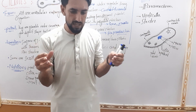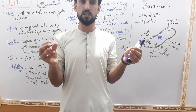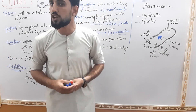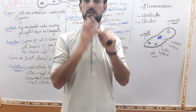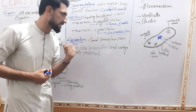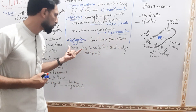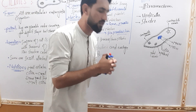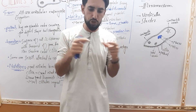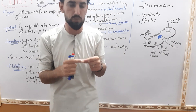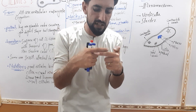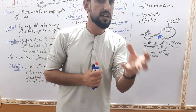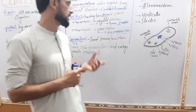In conjugation, two ciliates come together and a tube connects them. They exchange genetic material through this tube. This exchange of genetic material is the special sexual process called conjugation.